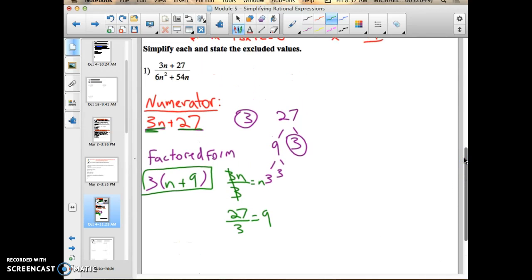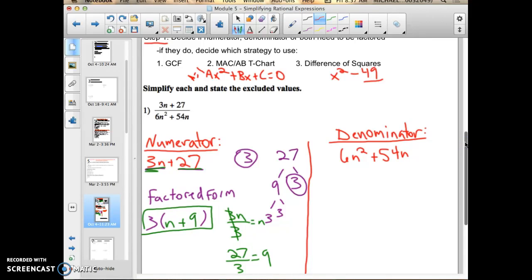So I am done factoring my numerator. I need to go to my denominator now. Draw separation, and then write denominator. As you're watching this, if you feel comfortable factoring, then you should be pretty okay while doing this step. But again, you need to be able to master this process in order to move on to part 2 of this objective. So my denominator is 6n squared plus 54n. Same process I have to consider. Can it be factored? And if it can, what strategy do I use? MACAB T-chart probably wouldn't be a good source for this. Difference of squares wouldn't work either because 54 is not a perfect square here. So again, I'm back to the GCF, finding the GCF.